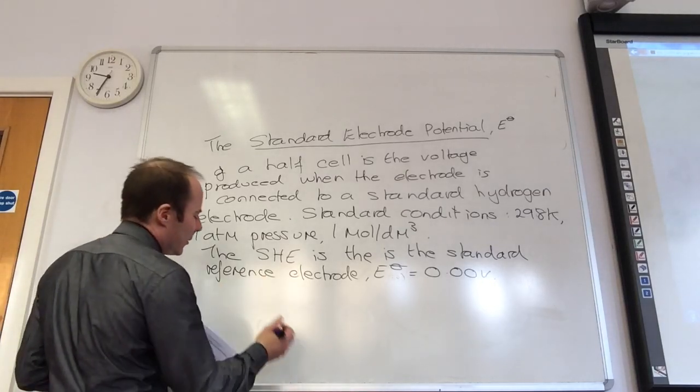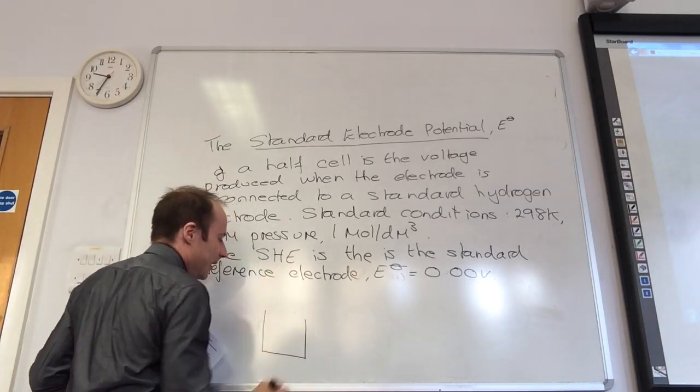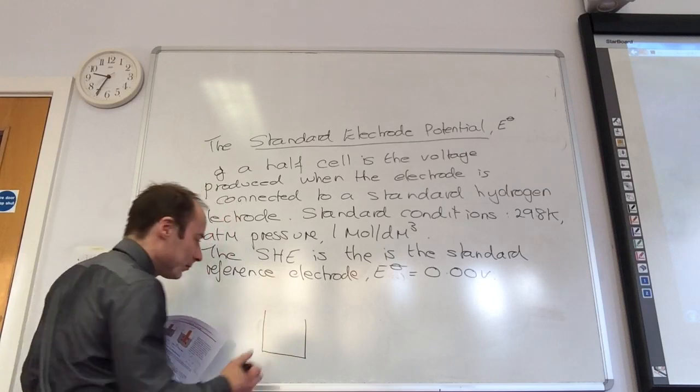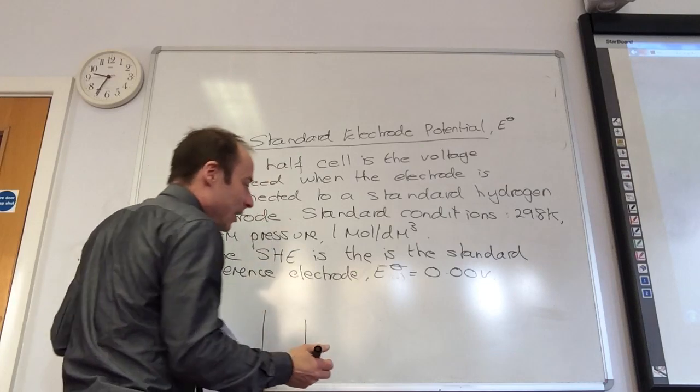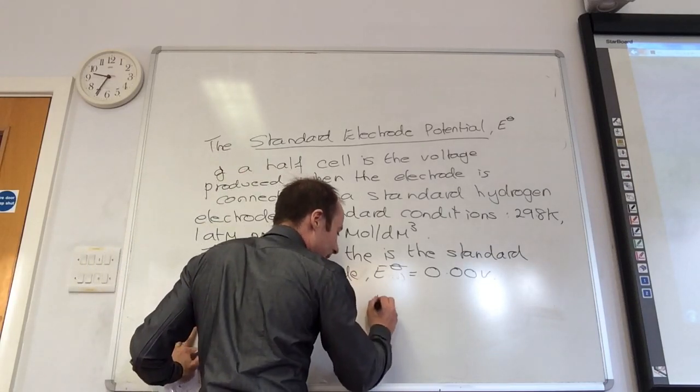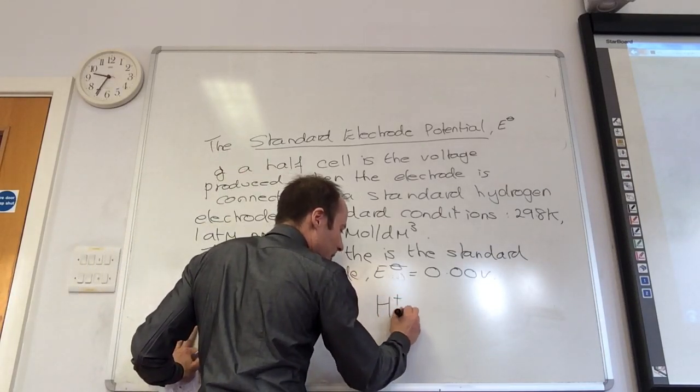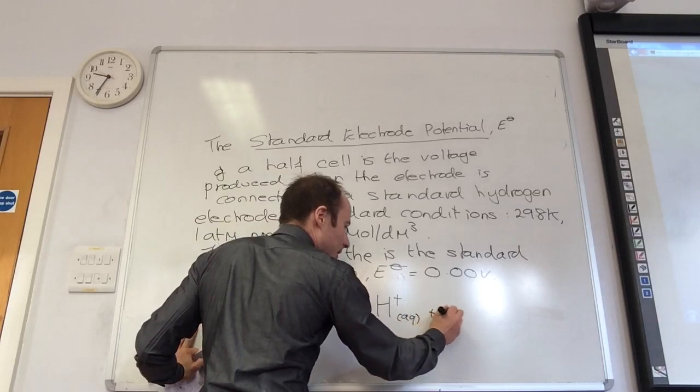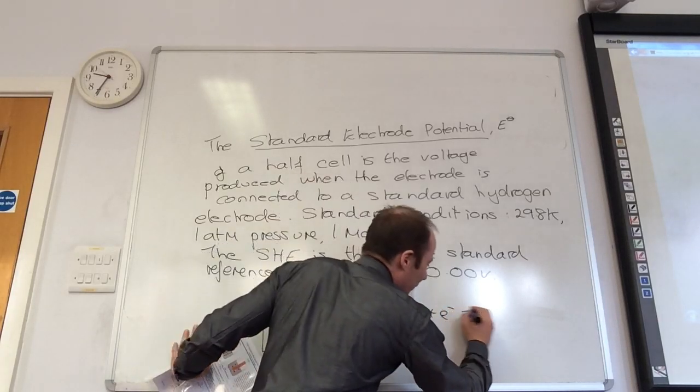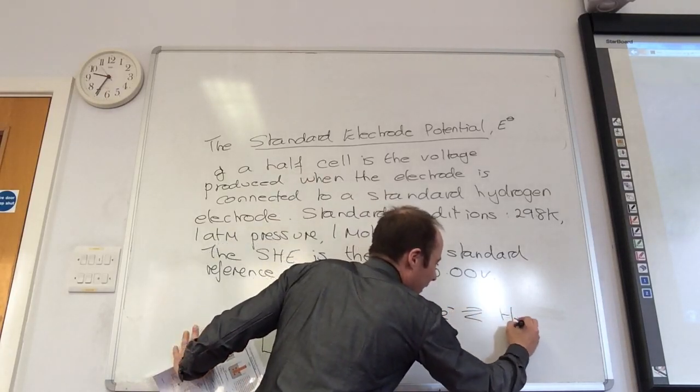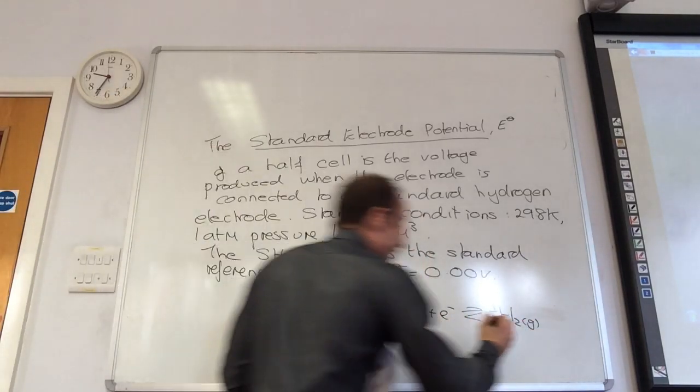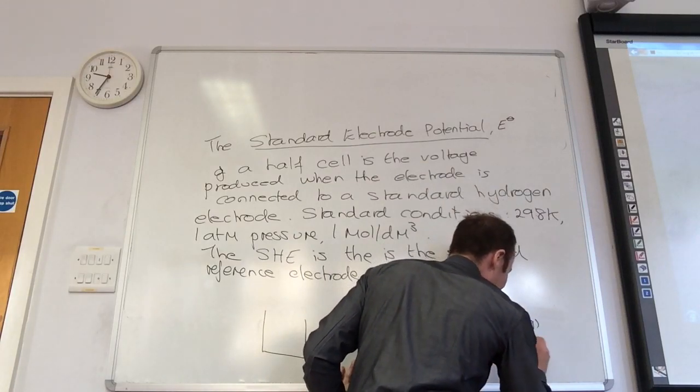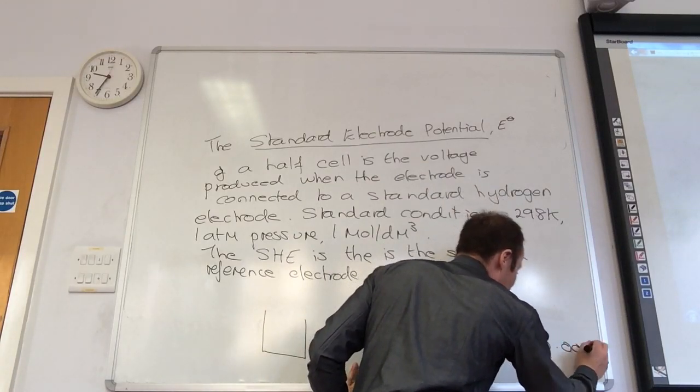Let's draw it. You've got to know how to draw this. You've got your beaker. The equilibrium we're looking at is 2H⁺ + 2e⁻ ⇌ H₂ gas. E° for this guy is zero volts.